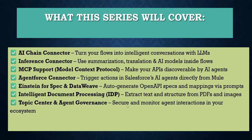IDP — intelligent document processing — will extract text and structure from PDFs and images. The final topic is the topic center and agent governance, which will be useful to secure and monitor agent interactions within your ecosystem.